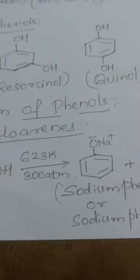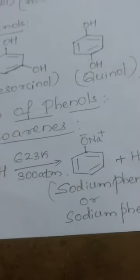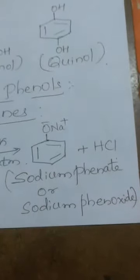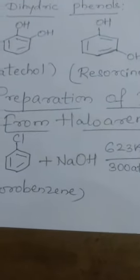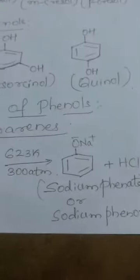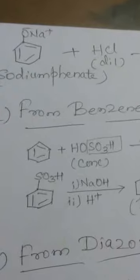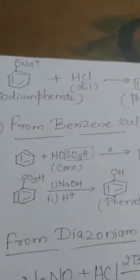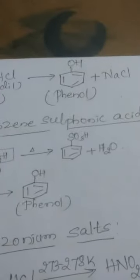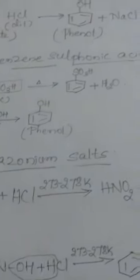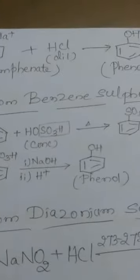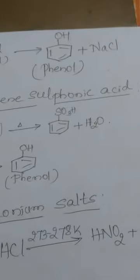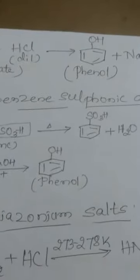The O⁻Na⁺ replaces the Cl of chlorobenzene, so you will get sodium phenate, also called sodium phenoxide. H⁺ from NaOH and Cl⁻ are eliminated as the byproduct HCl. This sodium phenate, C6H5O⁻Na⁺, is further subjected to acidification with dilute HCl. Na⁺ is replaced by H⁺ so that you get the product phenol and the byproduct NaCl. Sodium phenate reacts with dilute hydrochloric acid forming phenol and sodium chloride. This is how we obtain phenol from haloarenes.